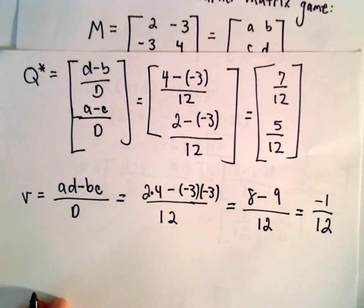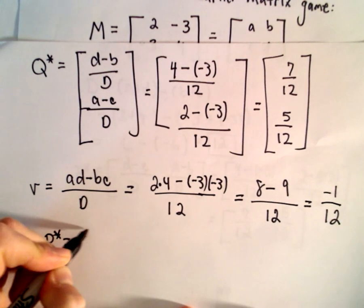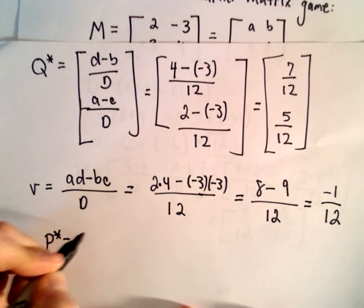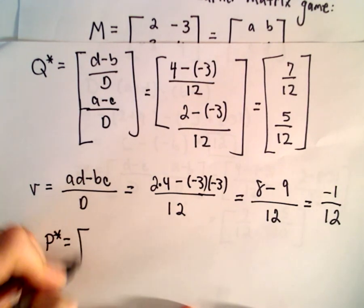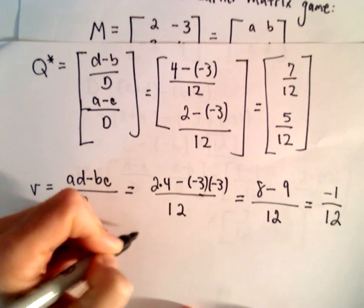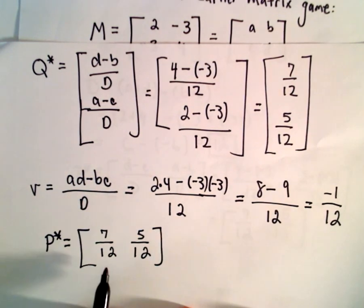In summary, what does all this mean? So what it says is, it says that R's optimal strategy, P star, is given by 7 twelfths and 5 twelfths. So what that means is, it says, using some sort of random process, maybe like the colored marbles in an urn that we mentioned at the very beginning, or some sort of spinner,